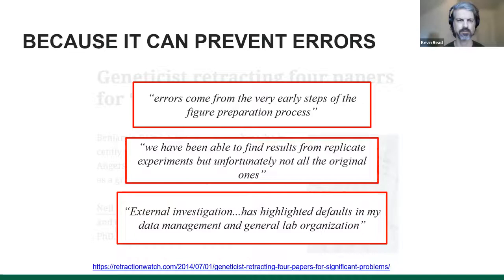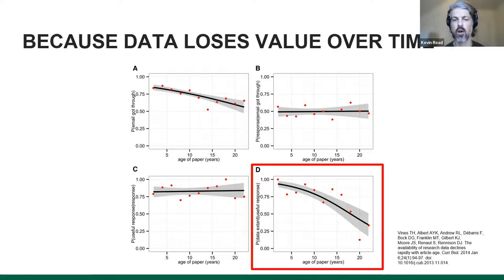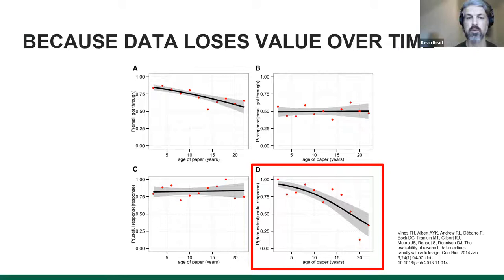Studies have shown that as soon as data or an article is published, the data underlying that publication loses value almost immediately. In this chart you can see over a number of years how available or useful data was, with researchers reaching out to authors and trying to reuse data. The main reason is that people stop taking care of data as soon as it's published — it's not given the same attention and because of it, it degrades over time.